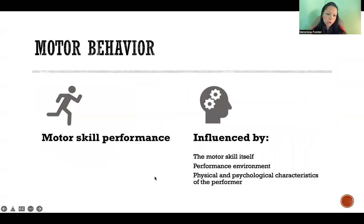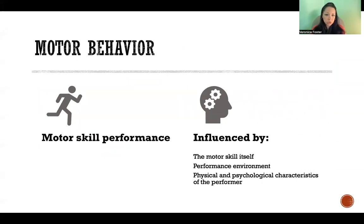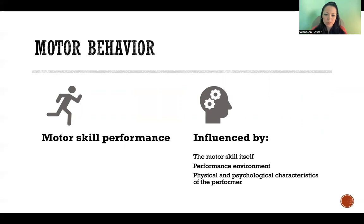Motor behavior is the performance of the motor skill — the actual execution of that motor skill. It is affected by the motor skill itself: what is the skill, how challenging it is, how much coordination it requires. It's also affected by the performance environment — in what environment are you performing that behavior — and the individual who's performing the behavior, including their physical and psychological characteristics.